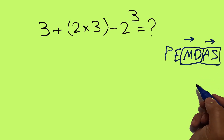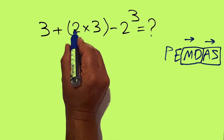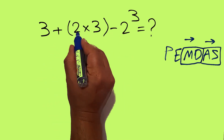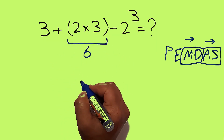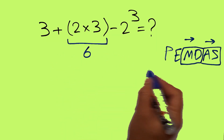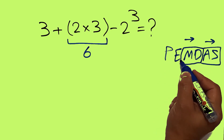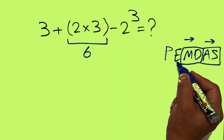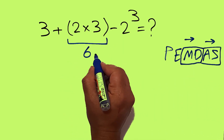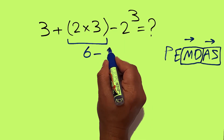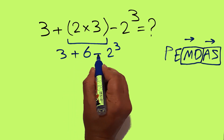And the same applies to addition and subtraction. So here, we first calculate these parentheses: 2 times 3 equals 6. In PEMDAS, after P we have E — E stands for exponents. So here we have minus 2 cubed: 3 plus 6 minus 2 cubed.